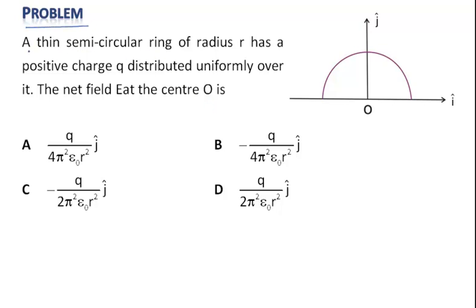Now let us look at the next problem: a thin semicircular ring of radius r has a positive charge q distributed uniformly over it. The net field E at the center O is - we have to find out the electric field.